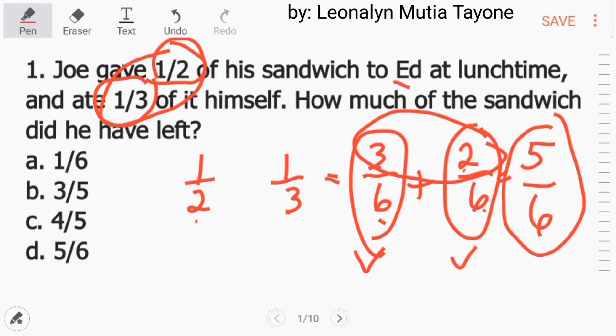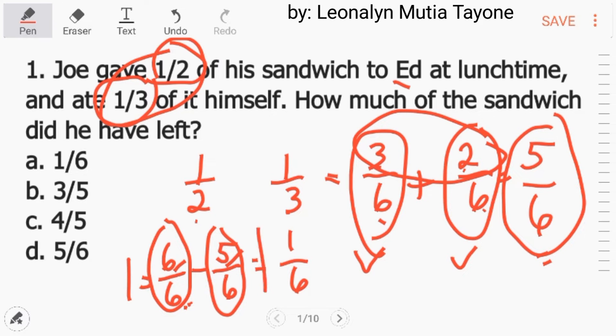Kopyahin lang yung denominator na 6. And this is 3 plus 2 equals 5. Bale, 5 over 6, yung nakain nila pareho. So, ang one-whole is equivalent to 6 over 6. Kasi pareho natin ang denominator. I-minus natin si 5 over 6 dyan. Kasi ito yung sa kanilang dalawa, at ito yung kabuuhan. Kopyahin lang ang denominator na 6. Pwede na tayo mag-deduct. 6 minus 5 equals 1. Ito na yung sagot, at ito na yung natira. Letter A.